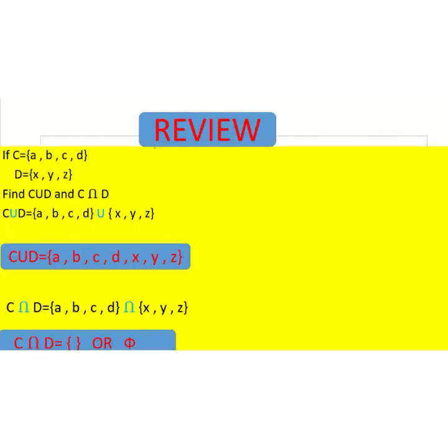Now we are quickly going to review the lesson. If set C is equals to A, B, C and D, and set D is equals to X, Y and Z, then the union of set C and D would be equals to A, B, C, D, X, Y and Z, because this set contains the elements of both sets C and D.